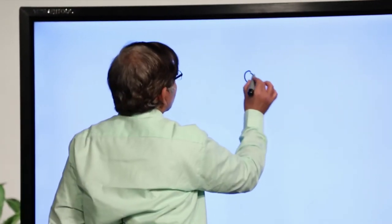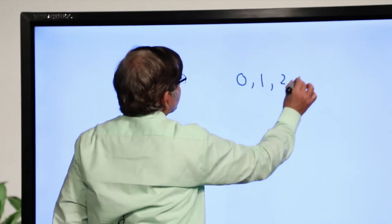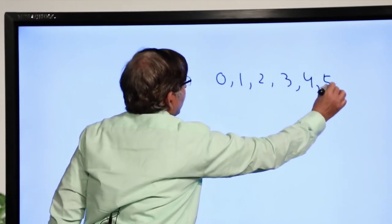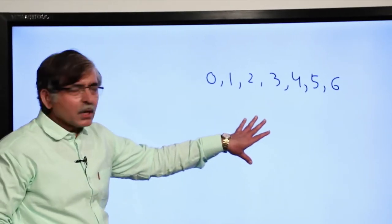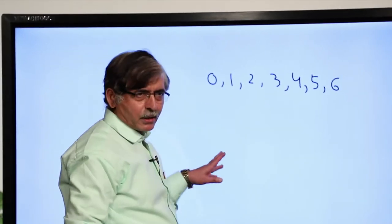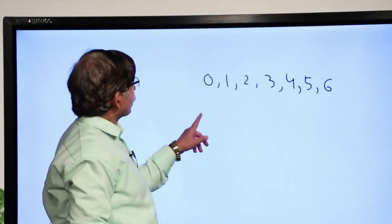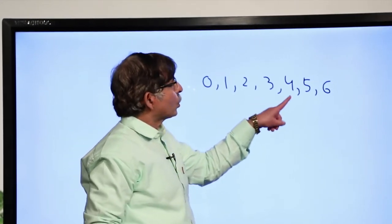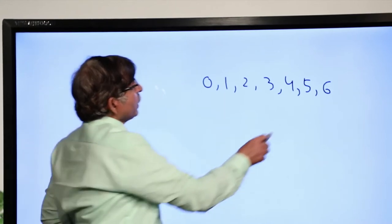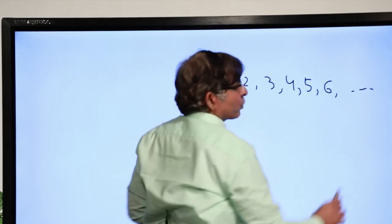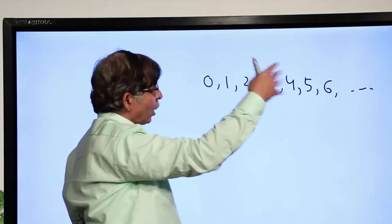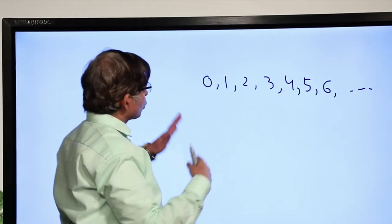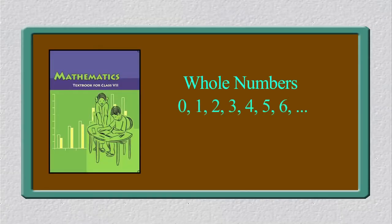Whole numbers are generally 0, 1, 2, 3, 4, 5, 6, and so on. You can see the difference: in case of natural numbers, the numbers start from 1, whereas whole numbers include 0 as well. There are so many numbers and we cannot say when they stop — this is whole numbers.